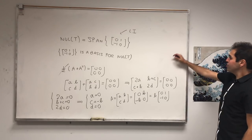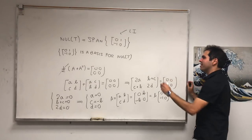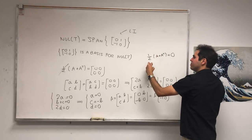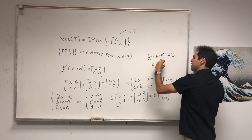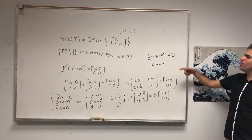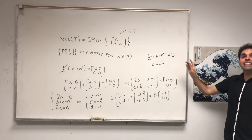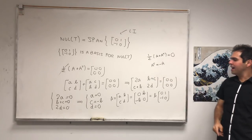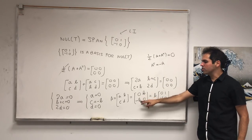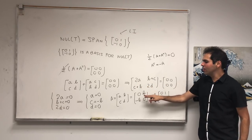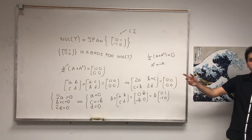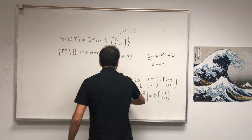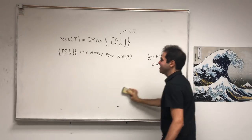It turns out that if one-half(A + A transpose) equals the zero matrix, then A transpose equals minus A. So really the null space is the set of anti-symmetric matrices — the ones where taking the transpose gives you minus your matrix. For 2-by-2 matrices, they have zeros on the diagonal and the off-diagonal terms are negatives of each other. And again, we didn't use any pivots.